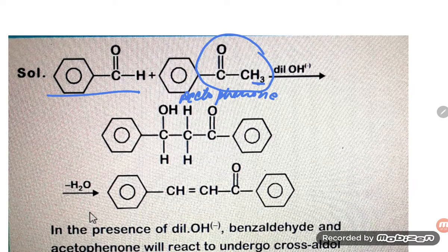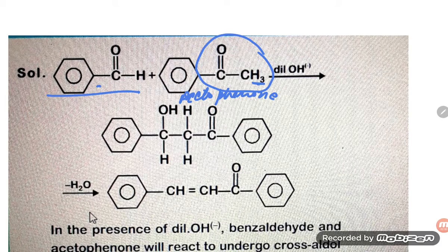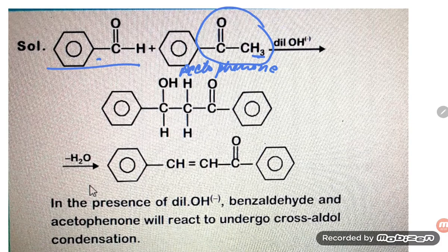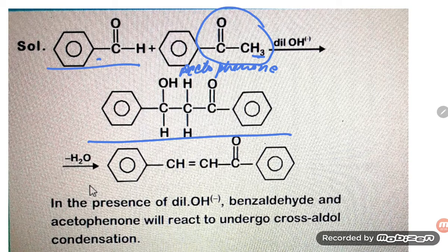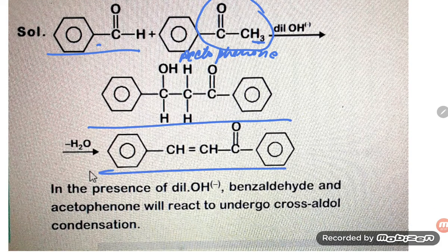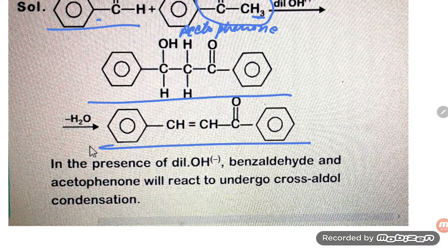So benzaldehyde is capable of going Cannizzaro reaction. But what is happening here: two different compounds are being used. If each is separate, acetophenone will go aldol, benzaldehyde will go Cannizzaro. But together, they will go cross aldol. Here you see the intermediate products, and then after loss of a water molecule, it forms the final product.